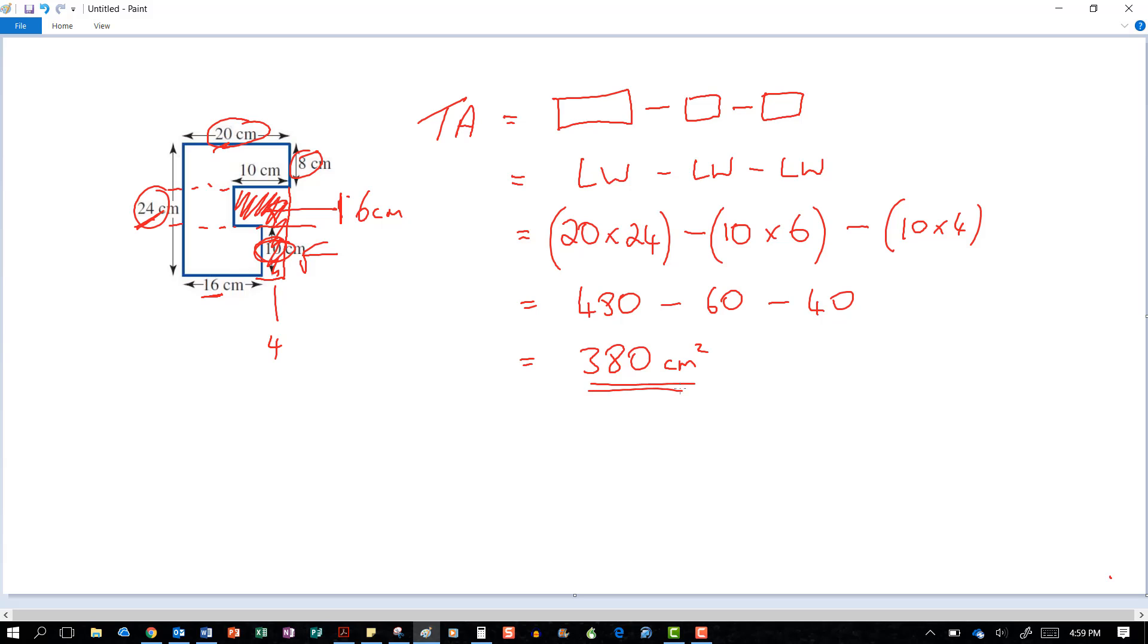And that's another way of finding the total area of a composite shape, doing the large rectangle and subtracting from it a rectangle here and a rectangle here to get the same shape as you see above. Thanks for watching.